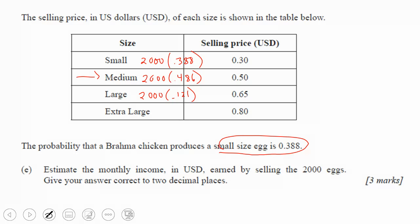And then extra-large eggs would be normal CDF, and the lower bound is 73. The upper bound is infinity, so 1E99, 55, and 7. So that calculation is going to give you the eggs in each category. And so if you take that times the price, then you would get the income.